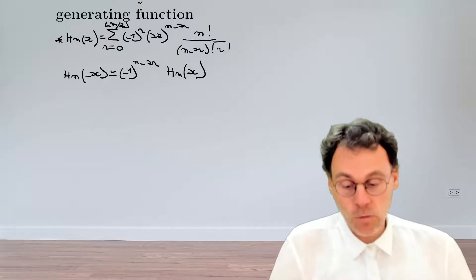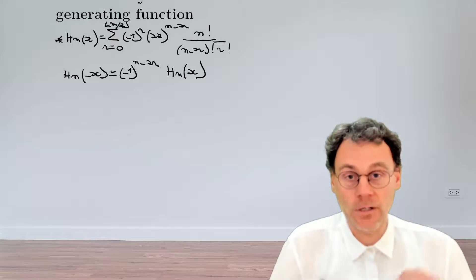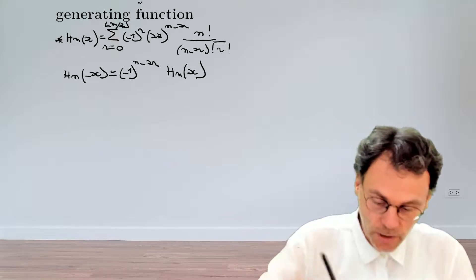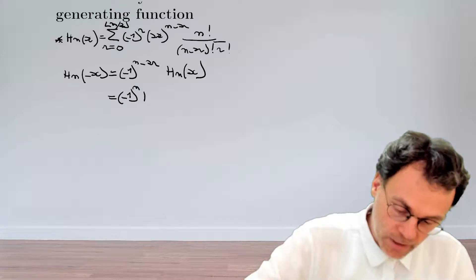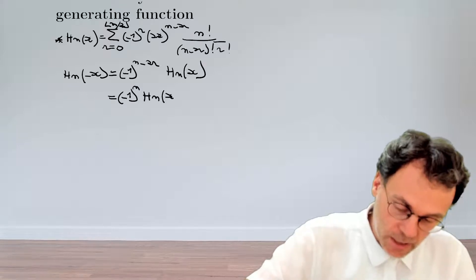Now, minus 1 to an even power, even if it's a negative even power, that just doesn't matter. That's 1. So in the end, we have that this is equal to minus 1 to the power of n times H_n of x.